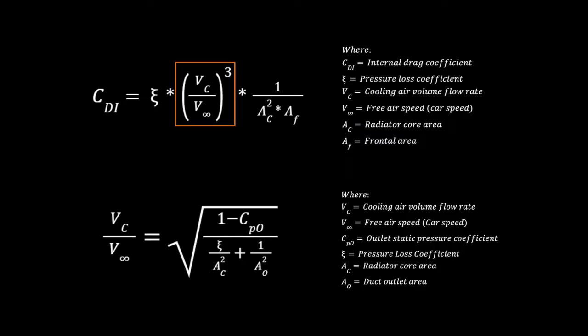The velocity ratio, that is the speed of the air at the face of the radiator to that of the free airspeed, is to the power of 3 in the internal drag equation. So we want to reduce the airspeed by as much as possible, helping to increase the static pressure at the face of the radiator whilst reducing drag. Having a small inlet with a large diffuser is our way to achieve this.